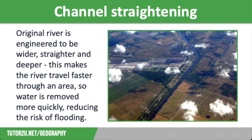The second method of hard engineering is channel straightening, where the original river is engineered to be wider, straighter, and deeper. This makes the river travel faster through an area so water is removed more quickly, reducing the risk of flooding. The advantage is that water is moved out of the area more quickly as there is less friction with the riverbed and banks to slow down the flow. The faster-flowing water stops sediment from building up, so there is less need for dredging.